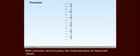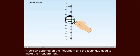Both precision and accuracy are characteristics of measured values. The degree of exactness of a measurement is called its precision. Precision depends on the instrument and the technique used to make the measurement.